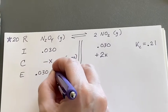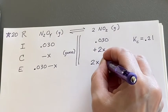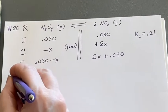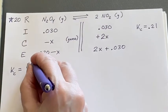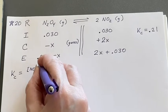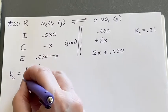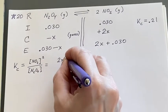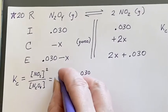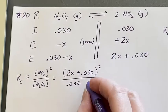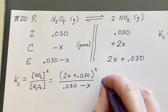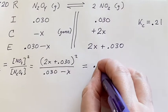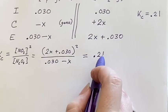Now I will look at K sub c. Reactants, so the concentration of NO2 squared because the stoichiometry over the concentration of the N2O4. So this is going to be 2x plus 0.030 squared over 0.030 minus x and this needs to be equal to the value we were given 0.21. So let's rearrange this so that we get ourselves a nice quadratic equation.